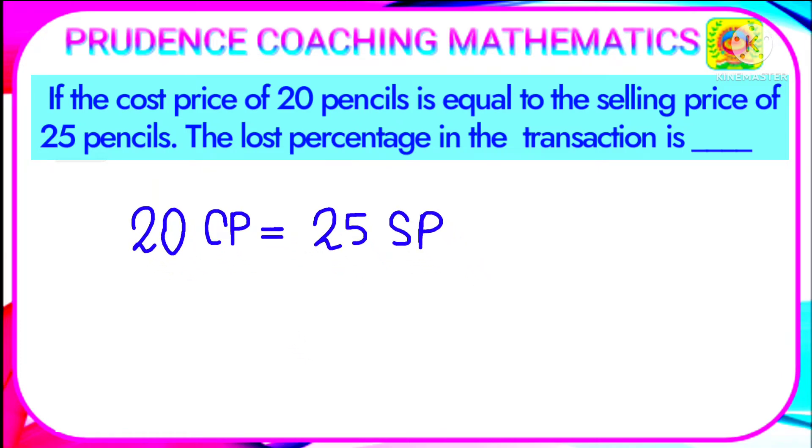From here we can find out the ratio of CP and SP. We can write CP/SP by bringing SP to the left hand side. It was in multiplication, so it will be in division. This equals 25/20. After cancellation, you can find out the ratio.